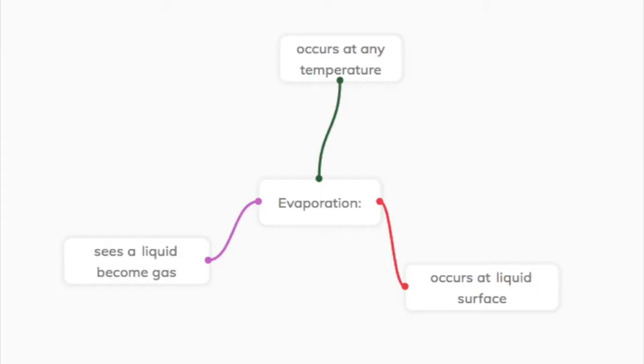Particles in a liquid travel at a range of different speeds. Some of the fastest particles with the most energy may have enough energy to escape from the surface of a liquid and enter the surrounding area of gas. When this happens, we call it evaporation.